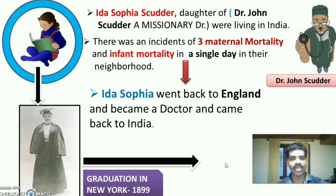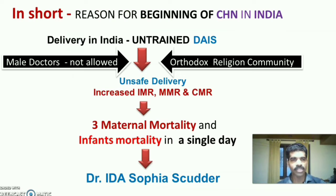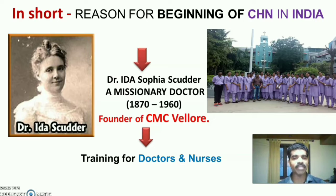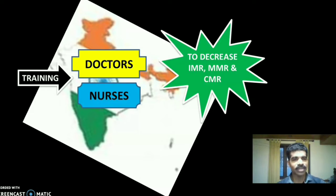Ida Sophia Scudder had a strong determination and passion to become a doctor. She went back to England, became a doctor, and came back to India to train doctors and nurses. With her strong determination, she became the founder of Christian Medical College, Vellore. She trained doctors and nurses to decrease infant mortality rate, maternal mortality rate, and child mortality rate in India.